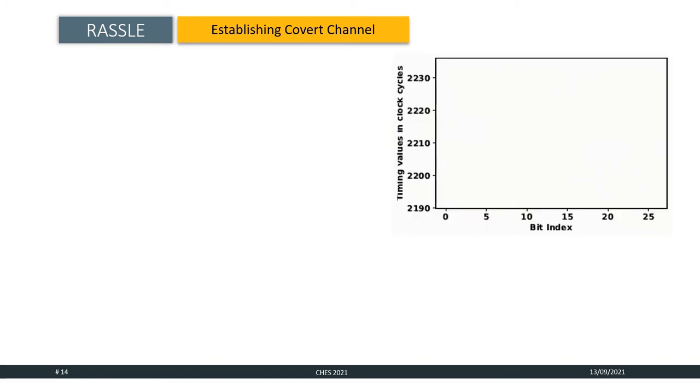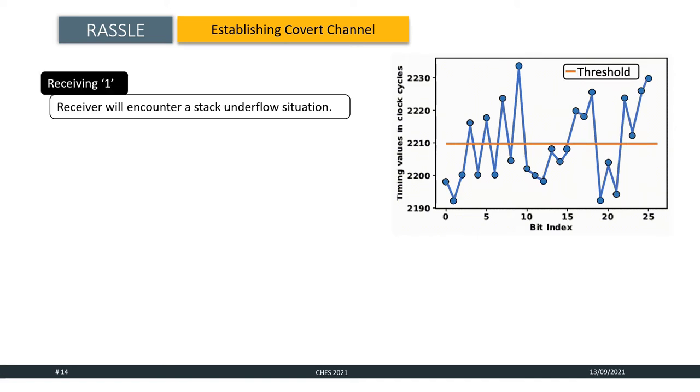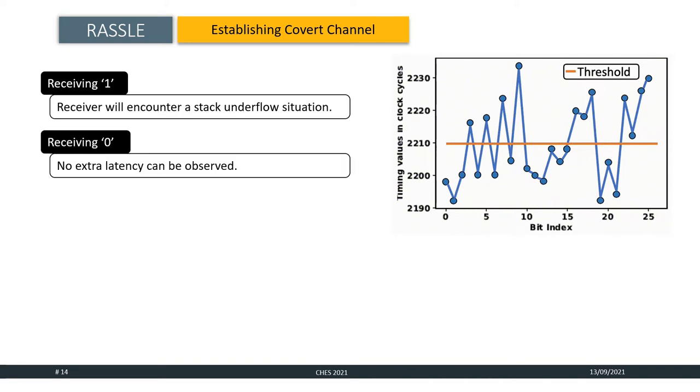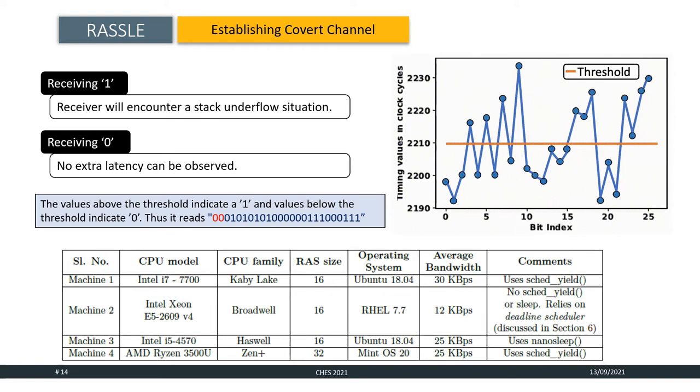To infer the message transmitted across the covert channel, the receiver measures the timing latency of its outermost function call. On receiving a 1, the receiver will encounter a stack underflow situation and thereby we will see an increase in the execution time, whereas on receiving a 0, no extra latency will be observed. The adjoining figure shows the timing values as observed by the receiver. The threshold is empirically selected and the timing values above the threshold denote a bit 1 and below the threshold denote a bit 0. We have conducted the experiment on multiple systems where we reverse engineered the size of the RAS and performed our covert channel experiment to observe the average bandwidth.